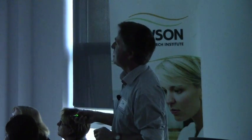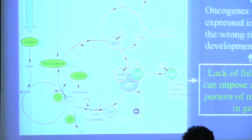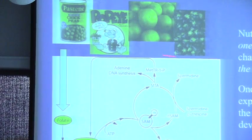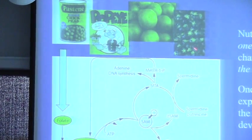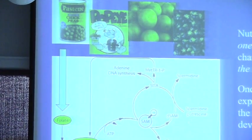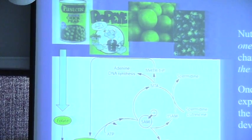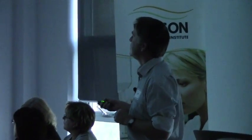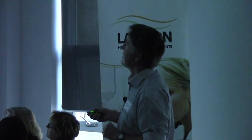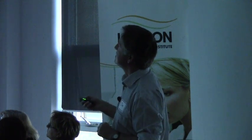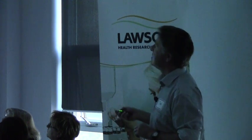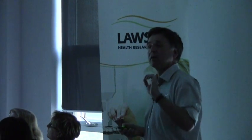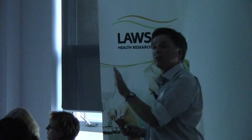Sources of methyl groups include folate from chickpeas, spinach, citrus fruits, and strawberries. Folate enters the pathway and produces methylated DNA. If you don't have enough folate in your diet, you can impose a heritable pattern of methylation on genes. When you do that, some genes in your cells may be expressed at the wrong time during development. That means nutritional changes in one generation can change cancer risk in the next, because you've changed the pattern of methylation in your own cells — which is why diet changes can affect cancer risk for you and also for your children.